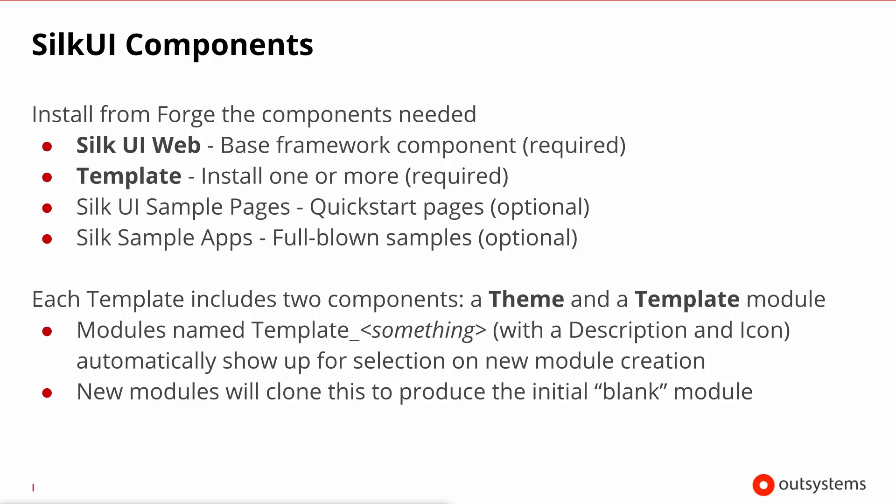To get you started with Silk UI web development, you need to have in your server at least the base framework and one or more templates. There are other support downloads that you can get from Forge that will help streamline your development by providing you samples. Each template bundle is actually made up of two components: a theme and a template module. The module is nothing more than your blank module that is already pre-prepared to use the associated theme.